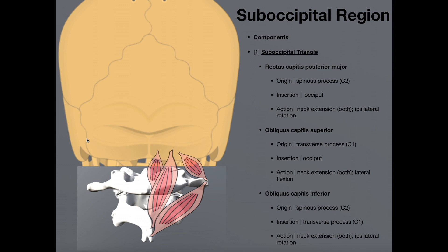Notice that beneath the occipital bone right here, we have the C1 vertebra, which is our atlas, and beneath that we have the C2 vertebra, which is the axis. The reason I mention that is we're going to see in a few minutes that several of these muscles are going to have origins and insertions on the atlas and the axis, and then some of them will have insertions on the occiput.